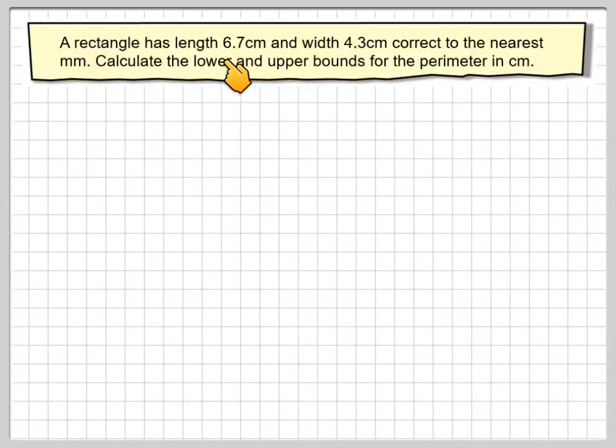A rectangle has a length of 6.7 centimeters and a width of 4.3 centimeters, correct to the nearest millimeter. Calculate the lower and upper bounds for the perimeter in centimeters.